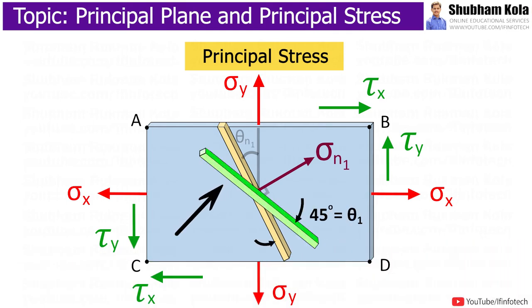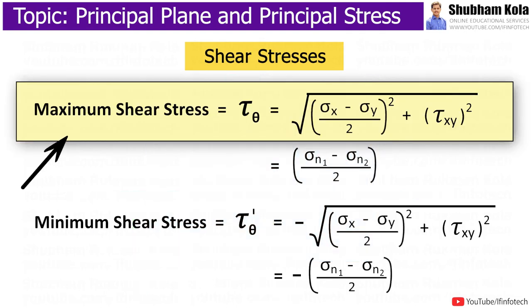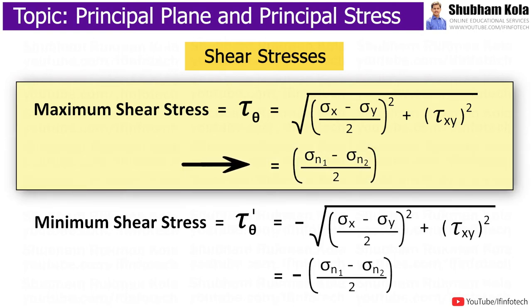But the planes of maximum shear stress are not necessarily planes of pure shear stress. And maximum shear stress, that is tau theta, is calculated by this formula. And another formula for minimum shear stress.